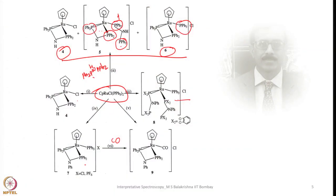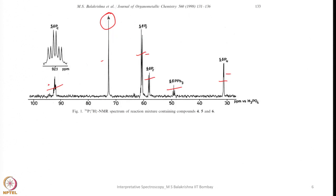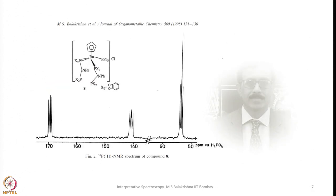So we can refine our methodology, and later all these compounds were prepared in pure form and analyzed. This compound was again prepared in a separate reaction by using the information obtained from the reaction mixture analysis, and then obtained in pure form. Now let us look into a few more examples.